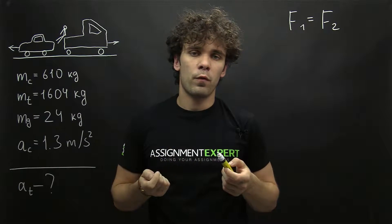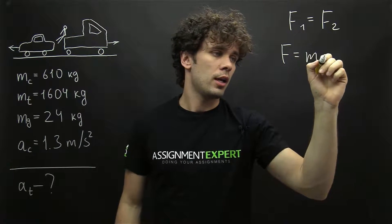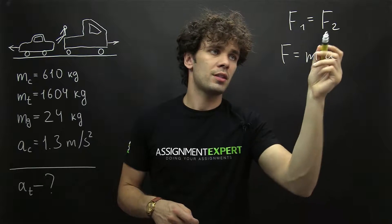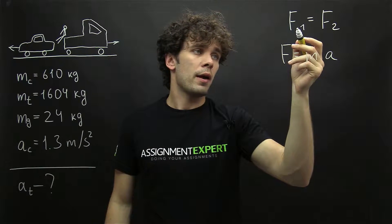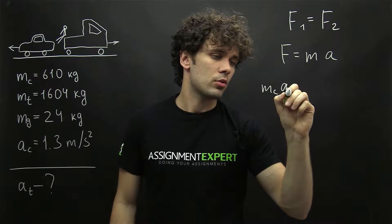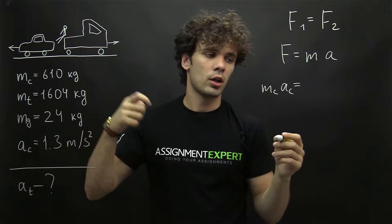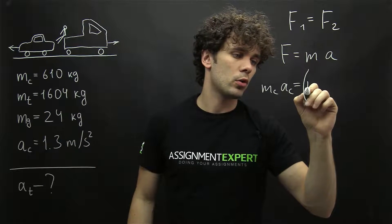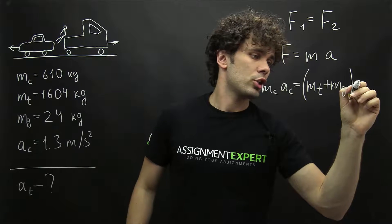We also know another law of Newton which relates force with acceleration: F equals MA. Using these two formulas for our two objects, on the left we have the force applied to the car, which is mass of the car times acceleration of the car. On the other side we have the system of the girl and the truck, so we have the mass of the truck plus mass of the girl, and here we have the acceleration of the truck.